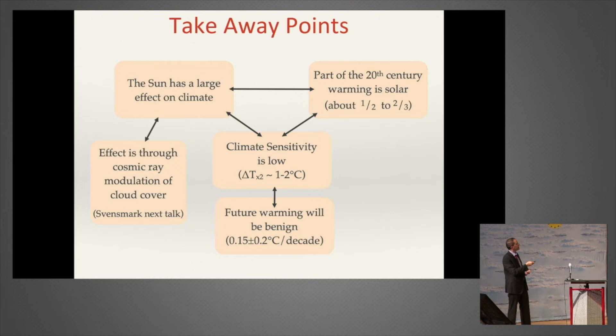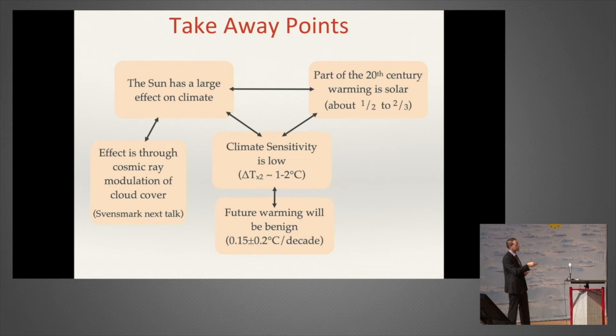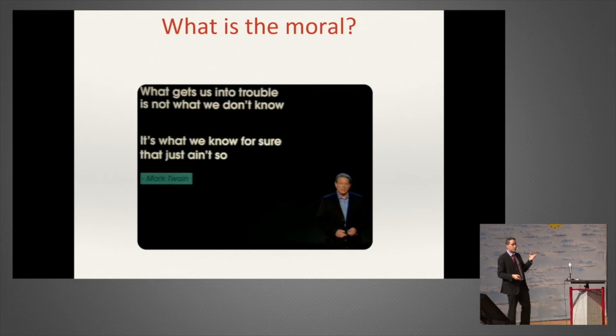So I will end with the summary I began with: the sun has a large effect on climate and explains about half to two-thirds of the warming over the 20th century. Climate sensitivity has to be on the low side—around one degree, or one and a half, or somewhat less than two degrees if you double the amount of CO2. That means the warming over the 21st century is going to be benign. The next talk will explain why the sun has a large effect on climate.